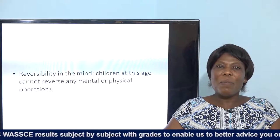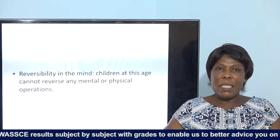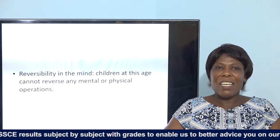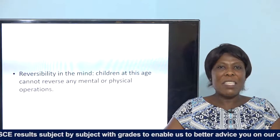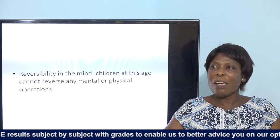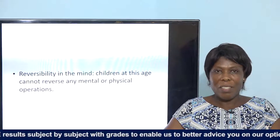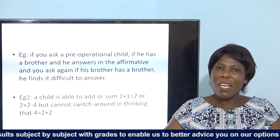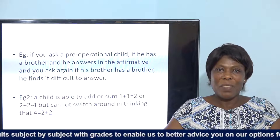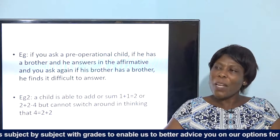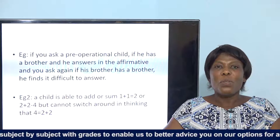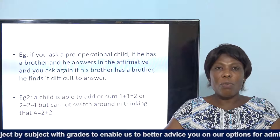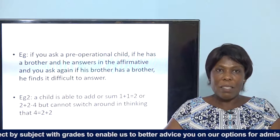They do not have conservation — they cannot understand that equal amounts were shared. Regarding reversibility, at this stage they cannot reverse any mental or physical operation. So while one plus one is two, and two plus two is four, they can never tell you that four is equal to two plus two.